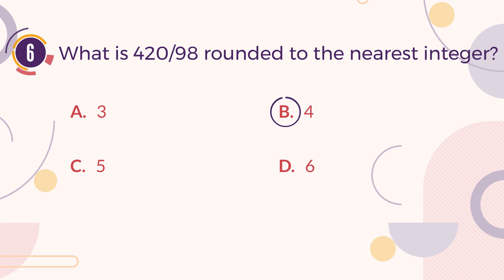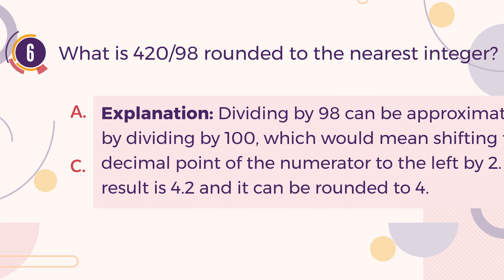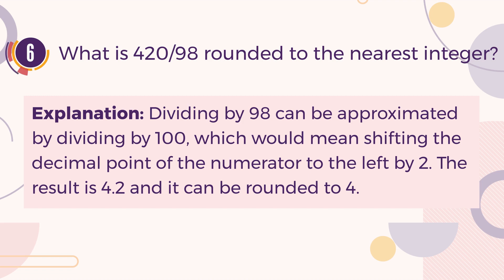The correct answer is B. 4. Explanation. Dividing by 98 can be approximated by dividing by 100, which would mean shifting the decimal point of the numerator to the left by 2. The result is 4.2, and it can be rounded to 4.